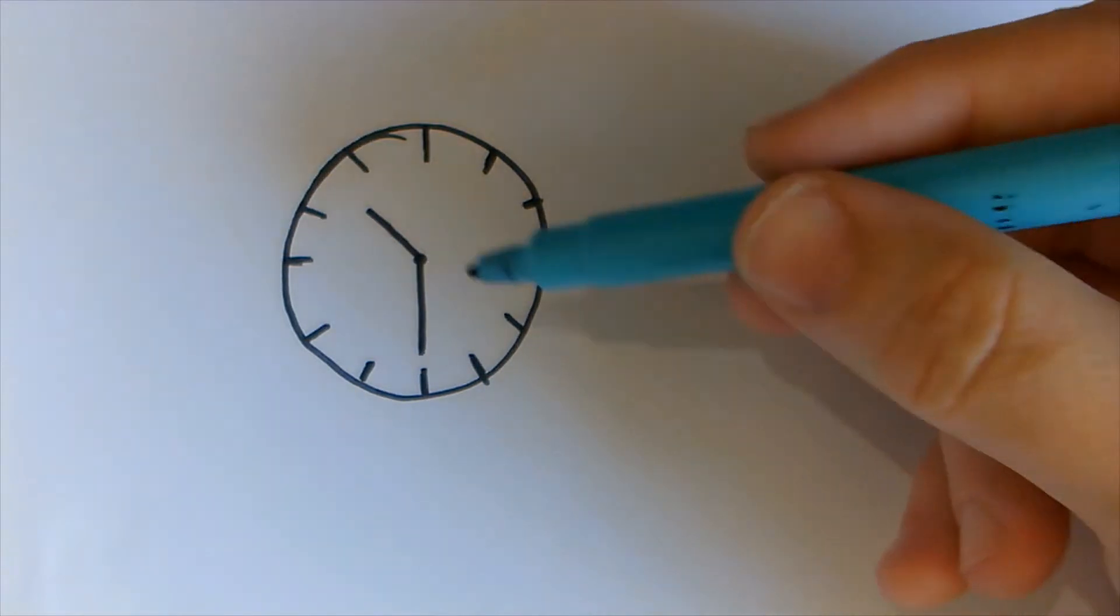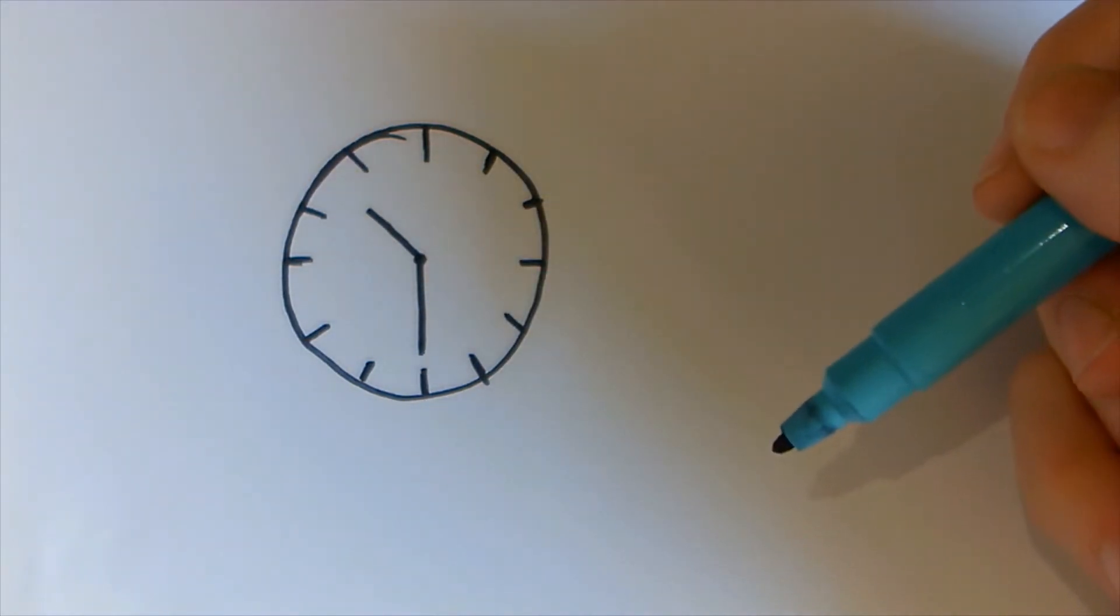We've got a clock here and it shows the time at half past 10. If the clock is reflected in a vertical mirror, what time would it appear to show? Press pause and have a go.